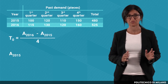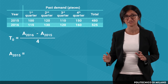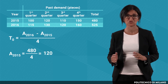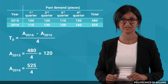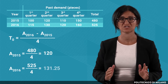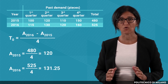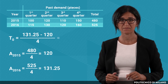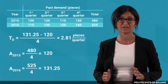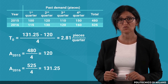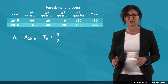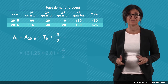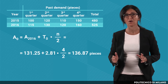The average demand in 2015 is equal to the total demand divided by the number of quarters, 4, so it's equal to 120 pieces. We do the same to compute the average demand in 2016, and we obtain 131.25 pieces. Therefore, the trend is equal to the difference between the two average values, all divided by 4, and we obtain a positive linear trend of 2.81 pieces per quarter. Now we can assess the average. We take the average of the more recent year 2016 and add the trend in n divided by 2 periods, and we obtain 136.87 pieces.